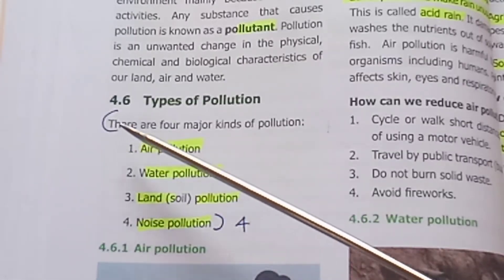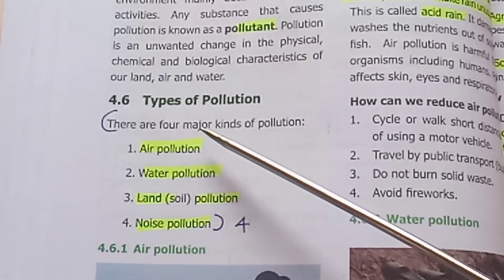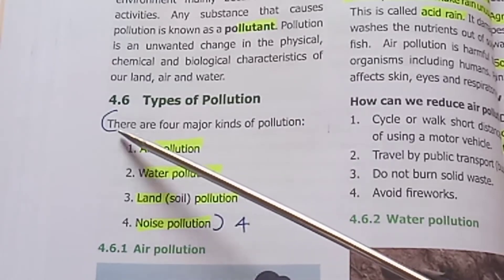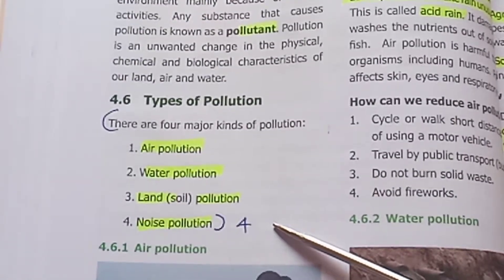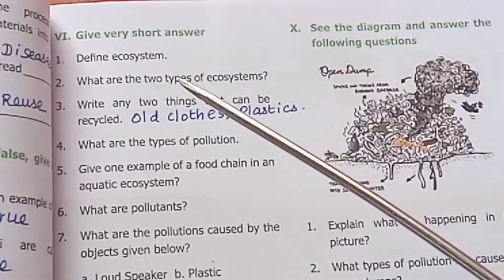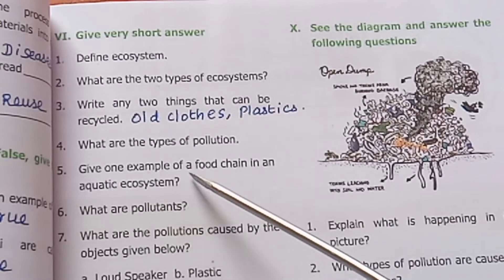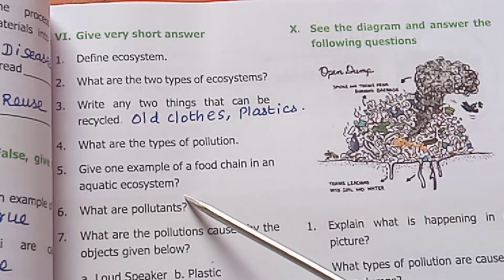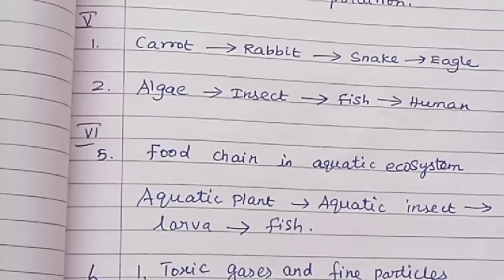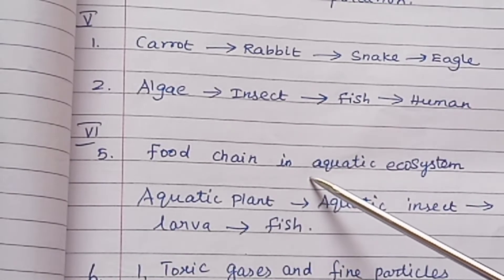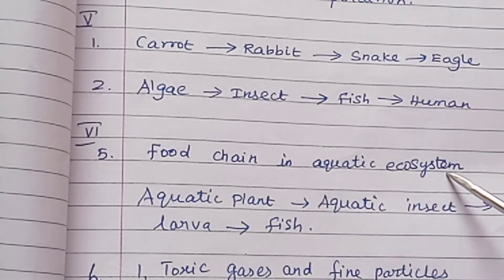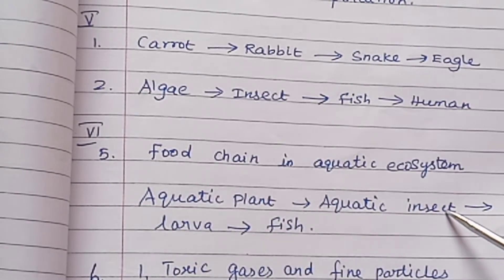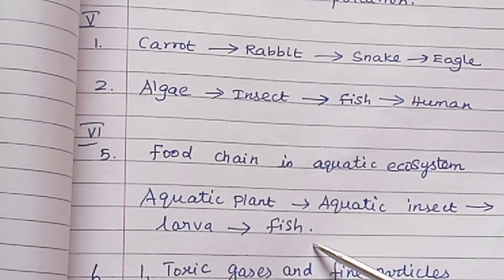What are the types of pollution - there are four major kinds of pollution including noise pollution. Give one example of a food chain in an aquatic ecosystem: aquatic plants, aquatic insects, larva, fish.